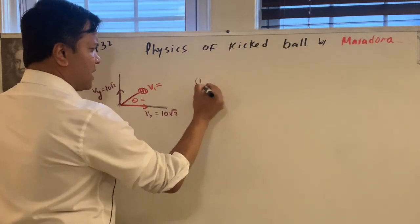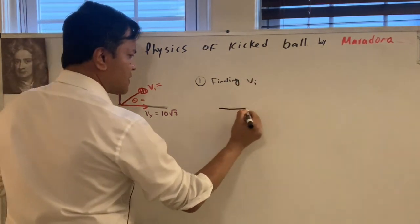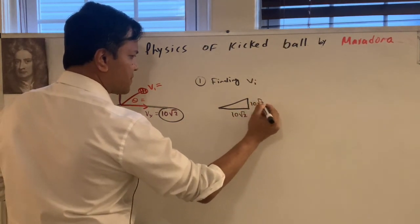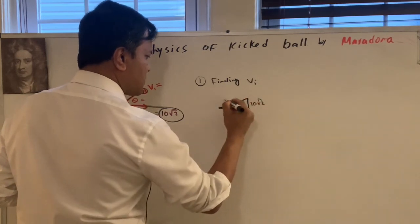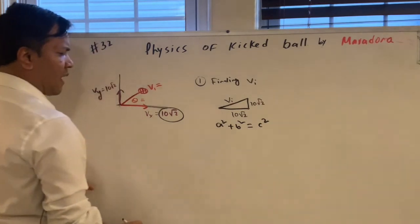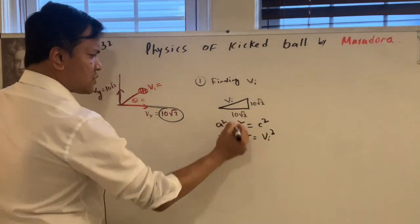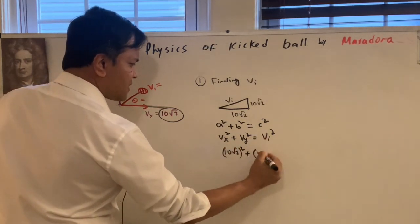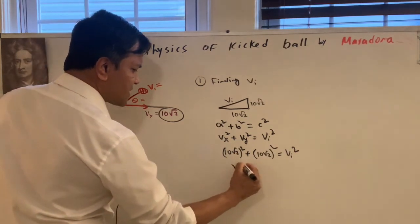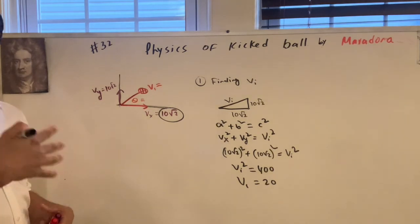Finding the initial velocity — I can use the Pythagorean theorem. Vx is 10√2 and Vy is 10√2, so: Vx² + Vy² = V_initial². That gives us (10√2)² + (10√2)² = 100·2 + 100·2 = 400. So V_initial² = 400, and V_initial = 20 meters per second.